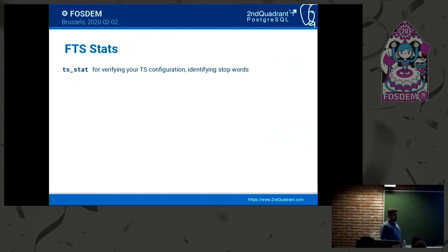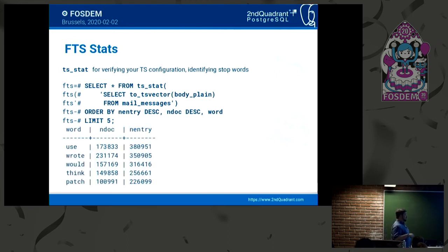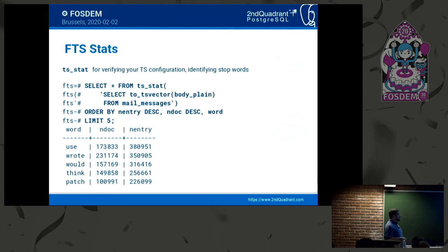Let's look at some statistics. We have the function ts_stat that can be used for verifying that our text search configuration works fine. If we SELECT * FROM ts_stat and pass it a ts_vector, it returns the number of documents, number of words, and the top words found. Running it on the hackers mailing list, the most common words were: use, wrote, would, think, patch — which is what you'd expect from the pgsql-hackers mailing list.